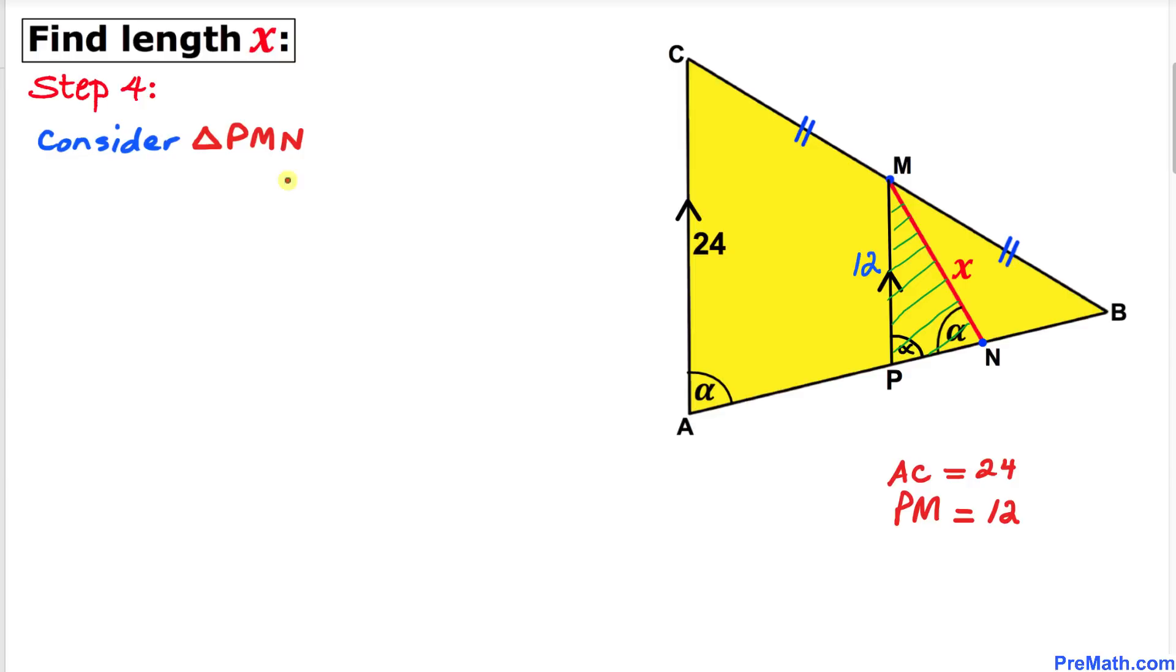Here's our next step. Let's focus on triangle PMN. We can see that this angle is alpha and this angle is also alpha. Therefore, this is an isosceles triangle, which means this side equals this side. So MN equals MP, and in our case MN is x, so x equals MP, which is 12.